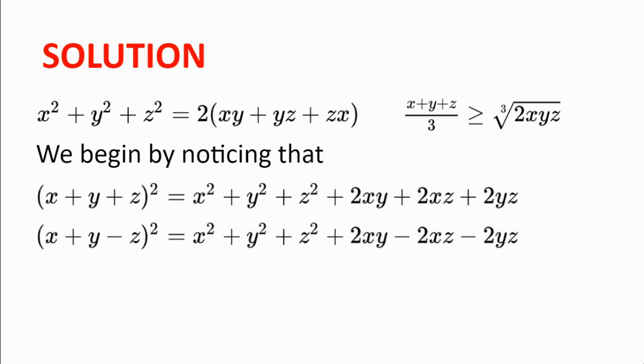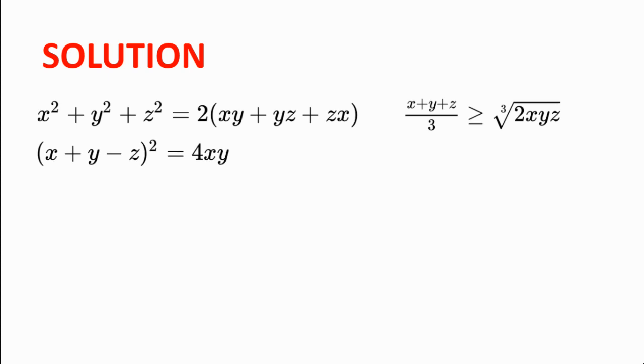Now, we can replace the x² + y² + z² with 2xy + 2yz + 2zx from the inequality we're given to get 4xy. So (x + y - z)² = 4xy.